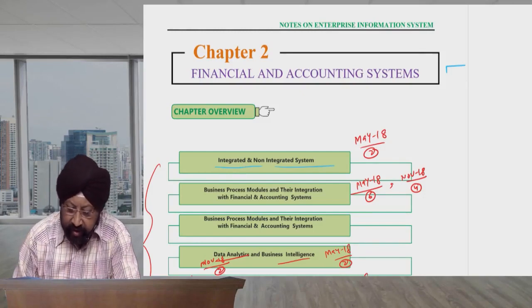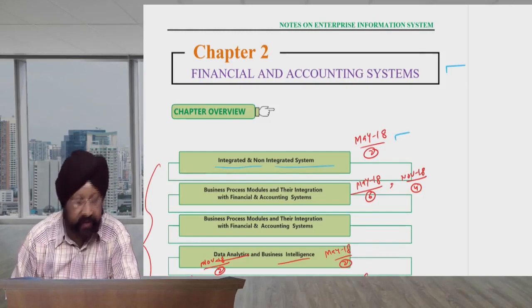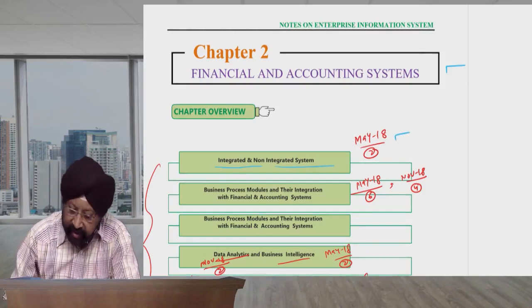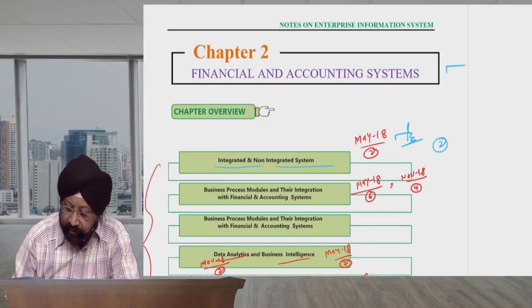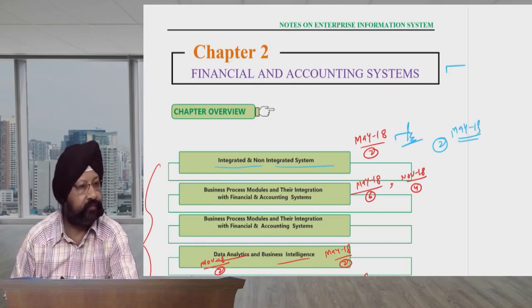First, Integrated and Non-Integrated System. May 18, a question of two marks came on it. But I think something can happen again. So I'm also covering this topic, at least for two marks in May 19.